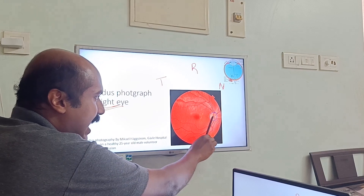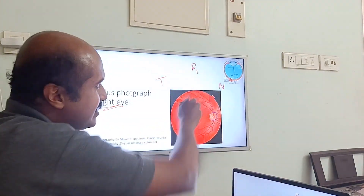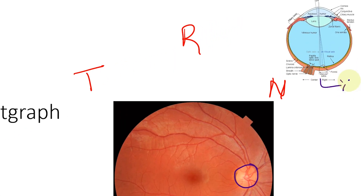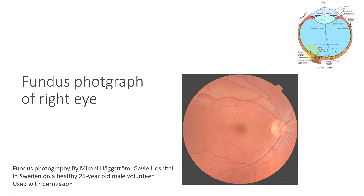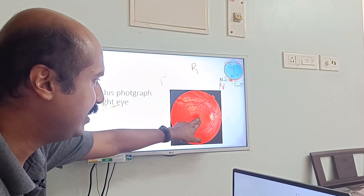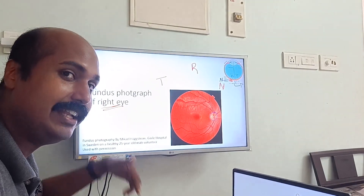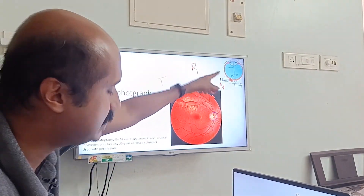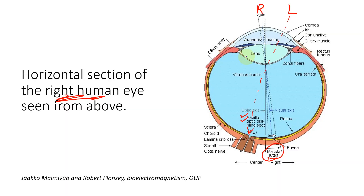Notice a very interesting phenomenon: the macula is more temporal and the optic disc is more nasal, as seen on this picture. But when you use your right eye with the left eye closed to look at R, the blind spot falls on the temporal aspect of the visual field. Why is that occurring? The reason is this system is actually a convex lens system.